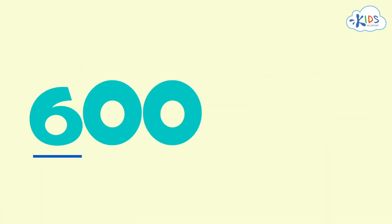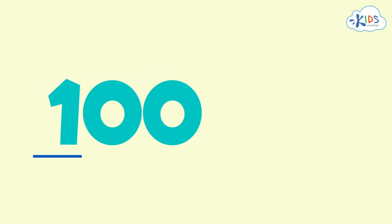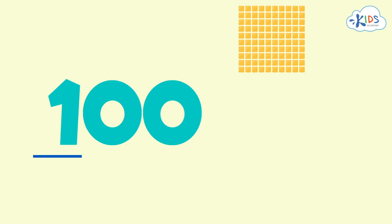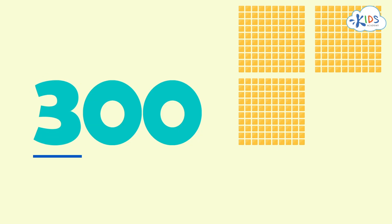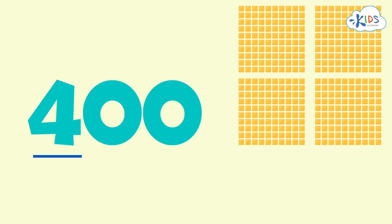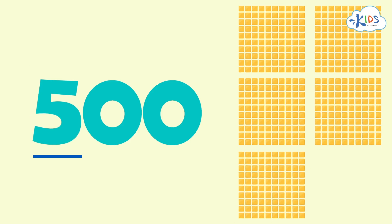There is a 6 in the hundreds place. We can count by hundreds to find the value of this digit: 100, 200, 300, 400, 500, and 600.